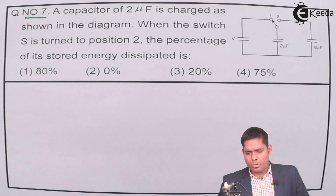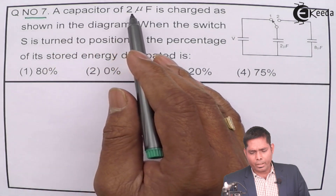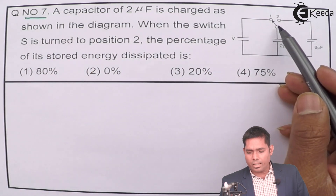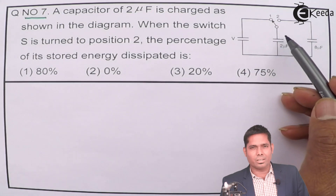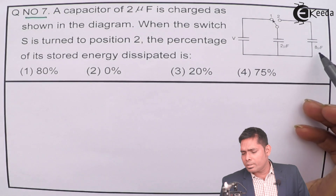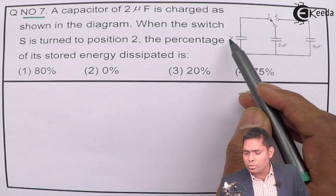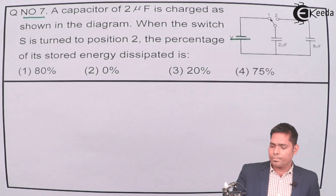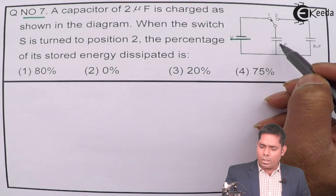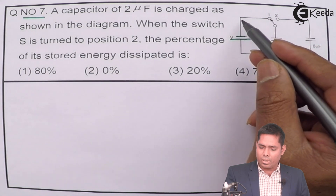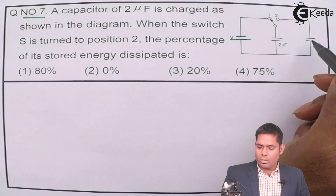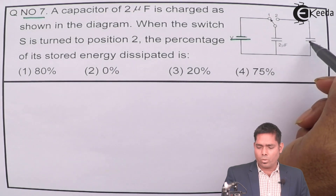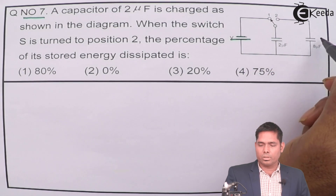The question states: a capacitor of 2 microfarad is charged as shown in the figure. In the initial condition, this is 8 microfarad and this is 2 microfarad, connected to a battery of voltage V. Initially, the 2 microfarad capacitor is in connection with the battery, while the 8 microfarad is not connected to the battery, so nothing is happening with that capacitor.